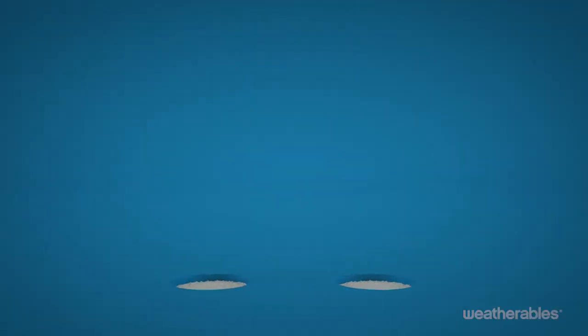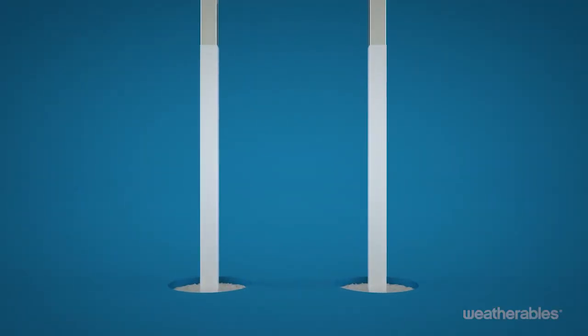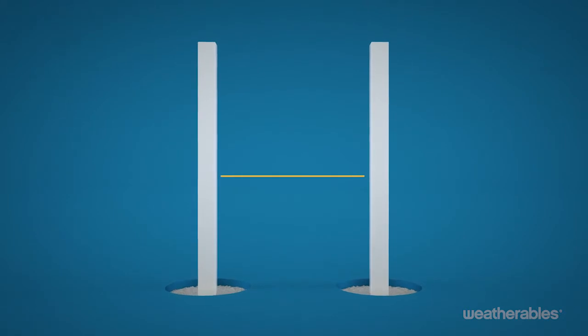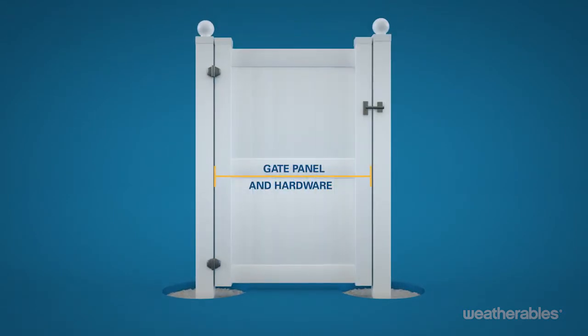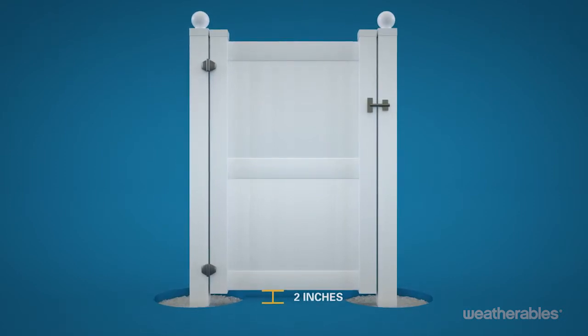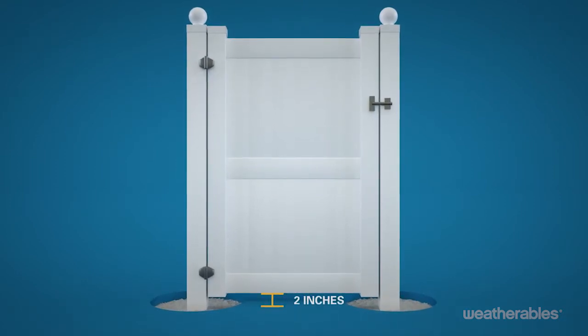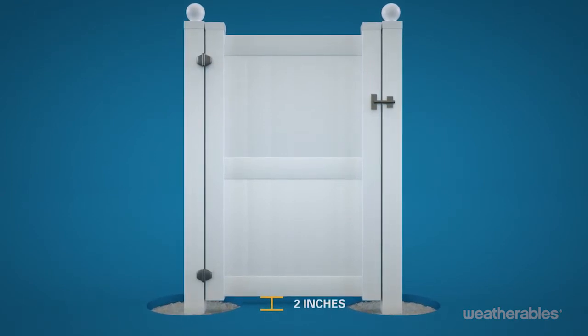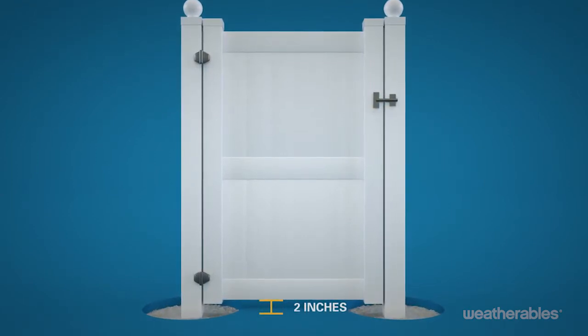First, set your gate posts with the aluminum inserts, being sure to allow enough space to accommodate both the gate panel and the gate hardware. You'll also want to allow a clearing of at least 2 inches between the bottom of the panel and the ground. This is a critical step since the gate will set the height for the rest of the fence.